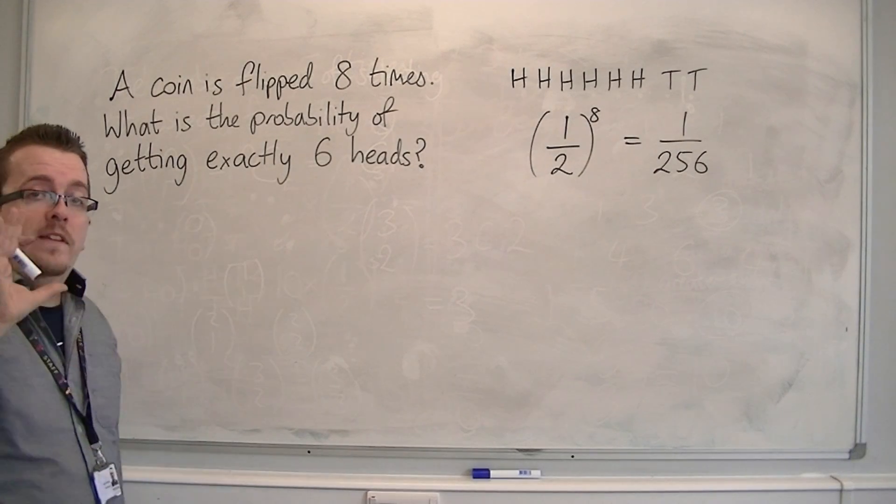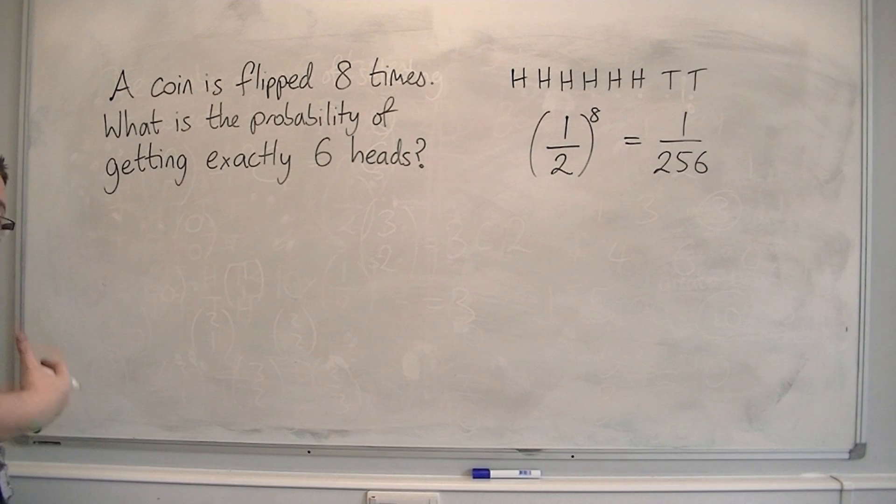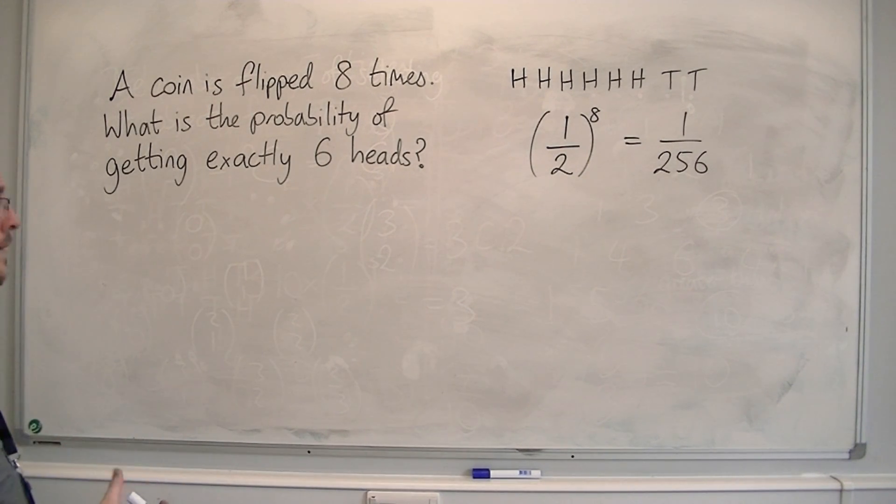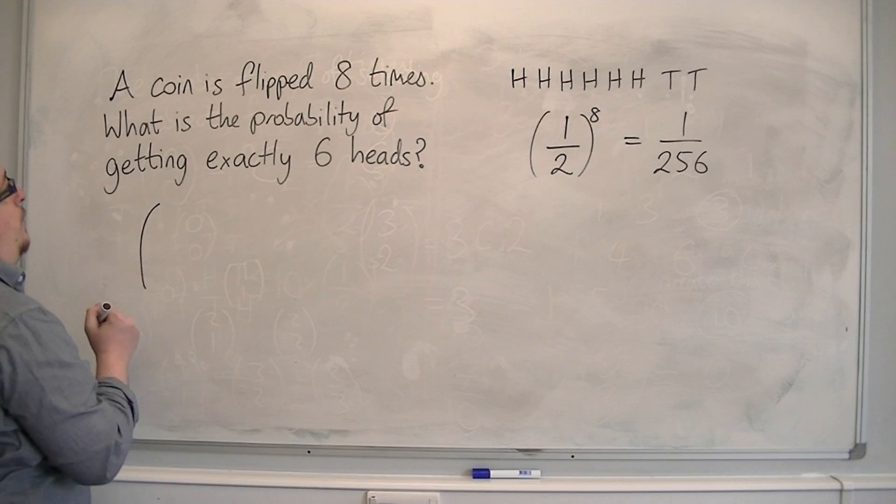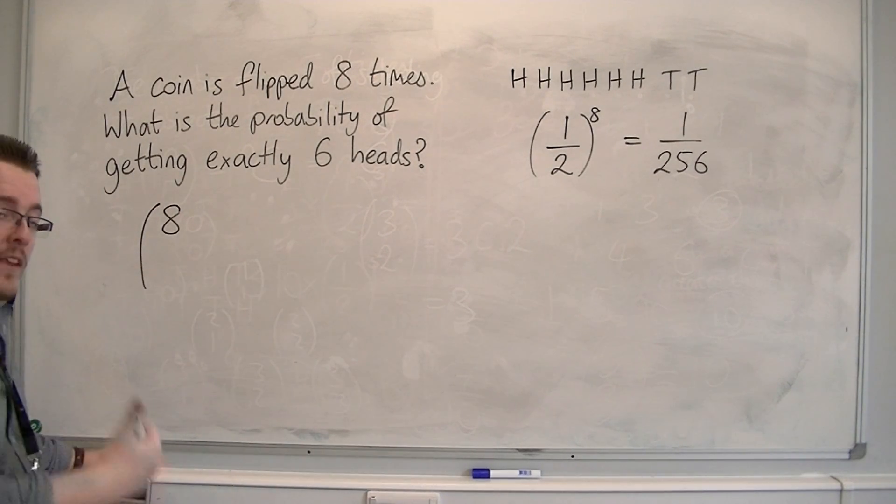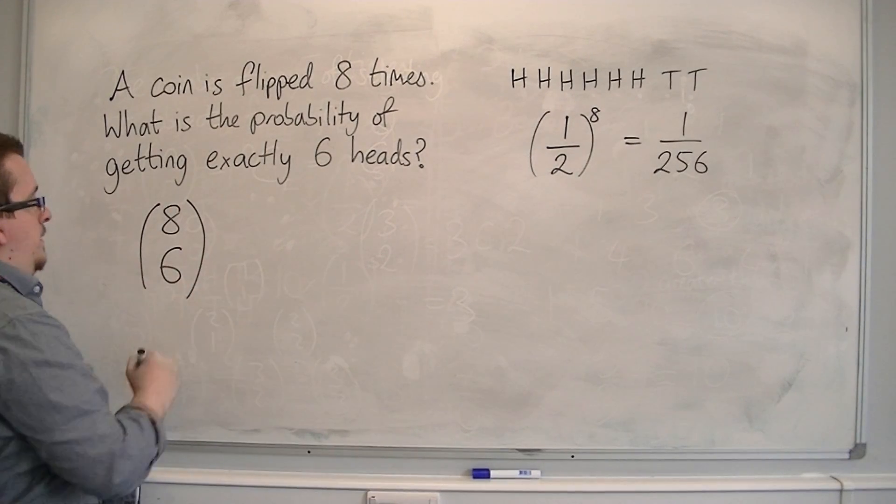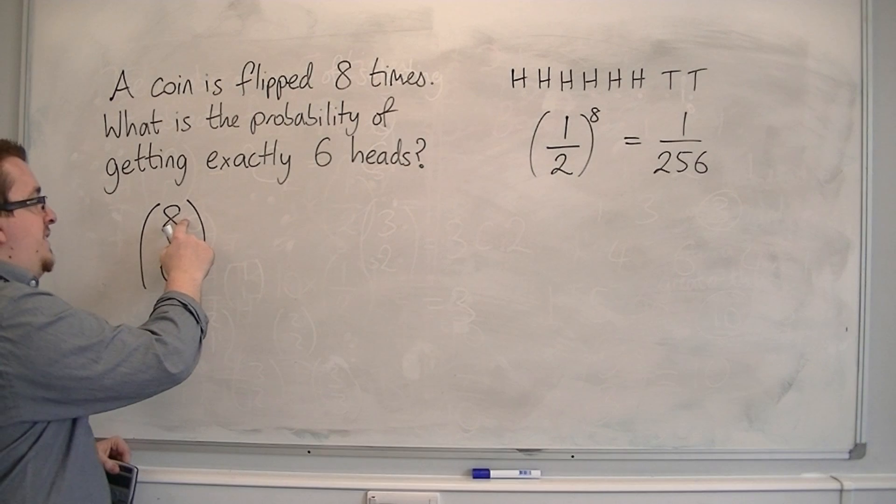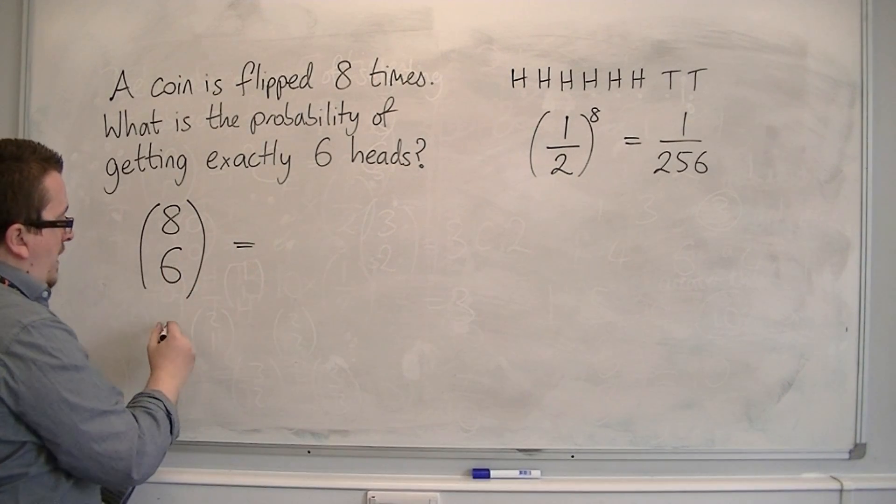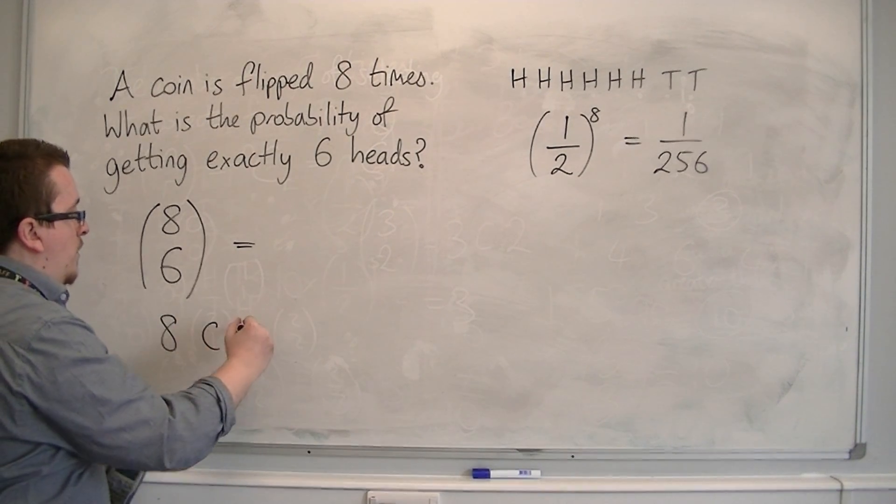Now as I said, there are a number of different combinations. Now the number of combinations can be found by using the NCR button. So out of a possible 8 times, I want heads to come up 6 times. So out of a possible 8, I want 6 heads to appear, and so this is plugged into the calculator using 8 NCR button 6.